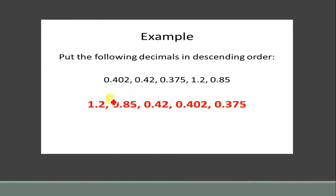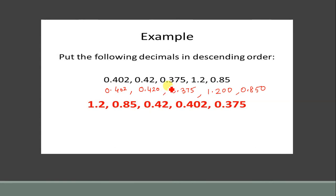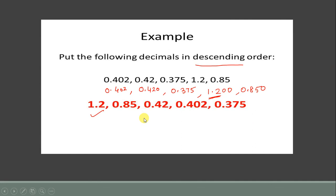Now an example of descending order. First make the decimal places equal: 0.402, 0.420, 0.375, 1.200, 0.850. Descending means greatest to smallest. Compare whole number parts first — all have zero as whole number part except 1.200, which has whole number 1, so that goes first. Next, on the tenths place: 8 is the greatest among the remaining, so 0.850 comes next. Then compare the remaining three — 0.420, 0.402, 0.375 — and arrange accordingly. This is how you arrange in ascending and descending order.